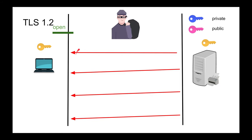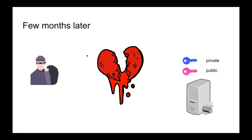A few months later, that same server has a bug — the Heartbleed problem. Heartbleed is a buffer over-read vulnerability that allows an attacker to request more data from the server's memory than intended. That returned memory sometimes contains the private key, since it's used frequently and cached in memory.